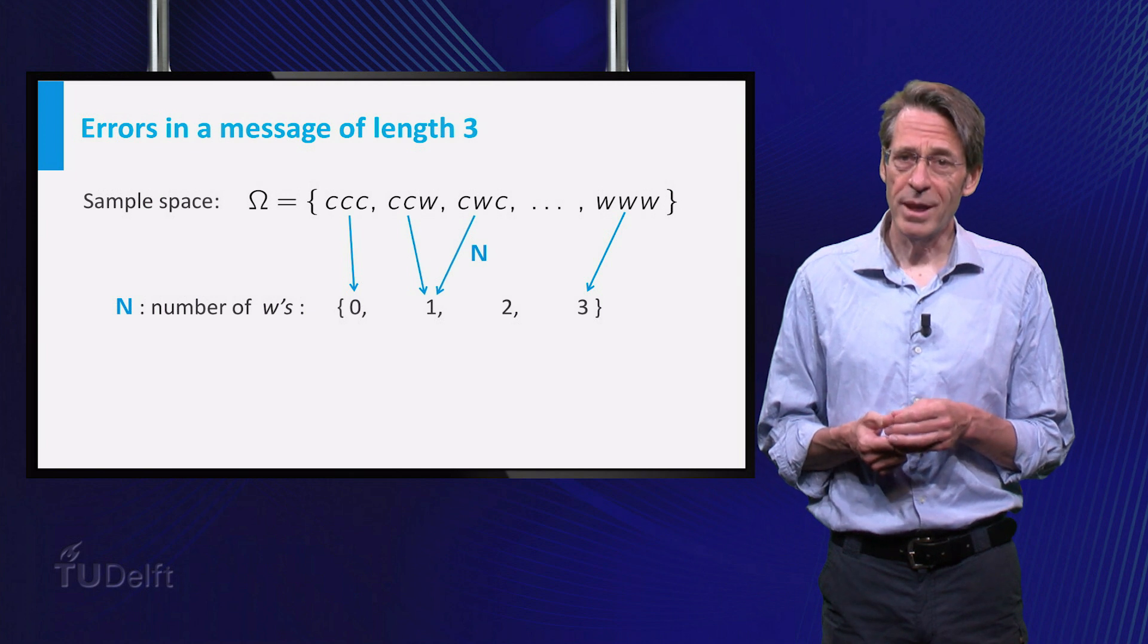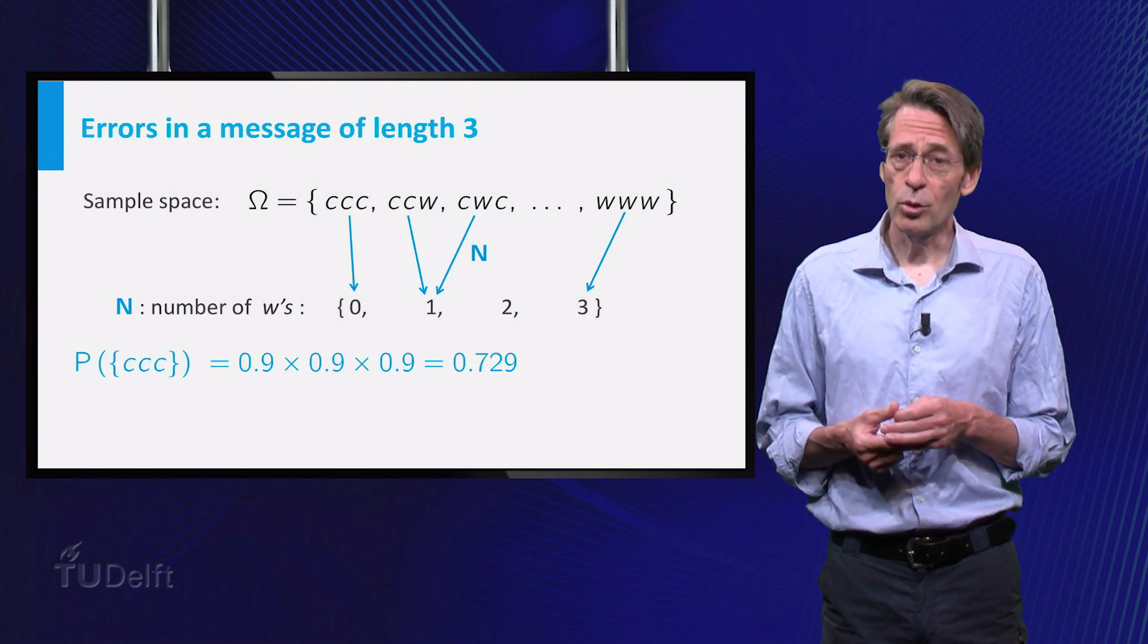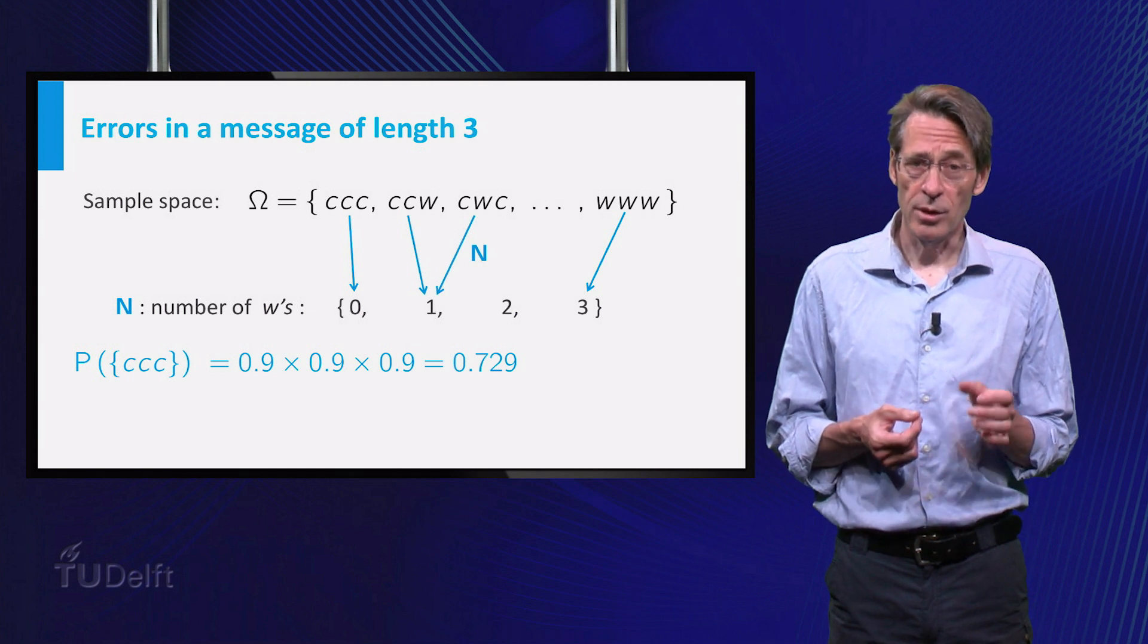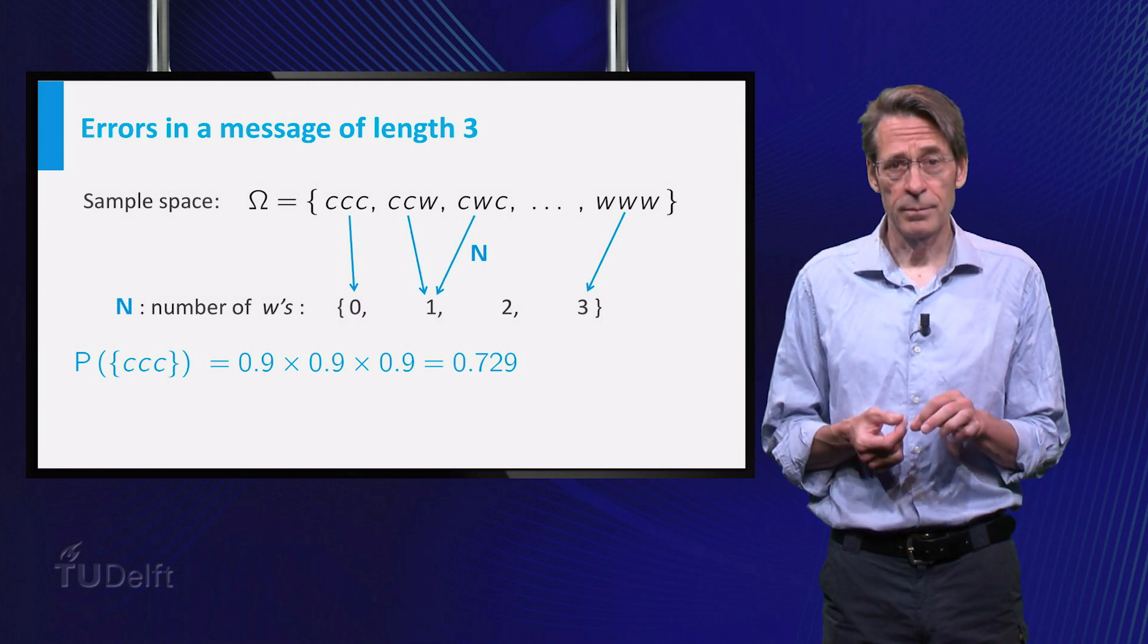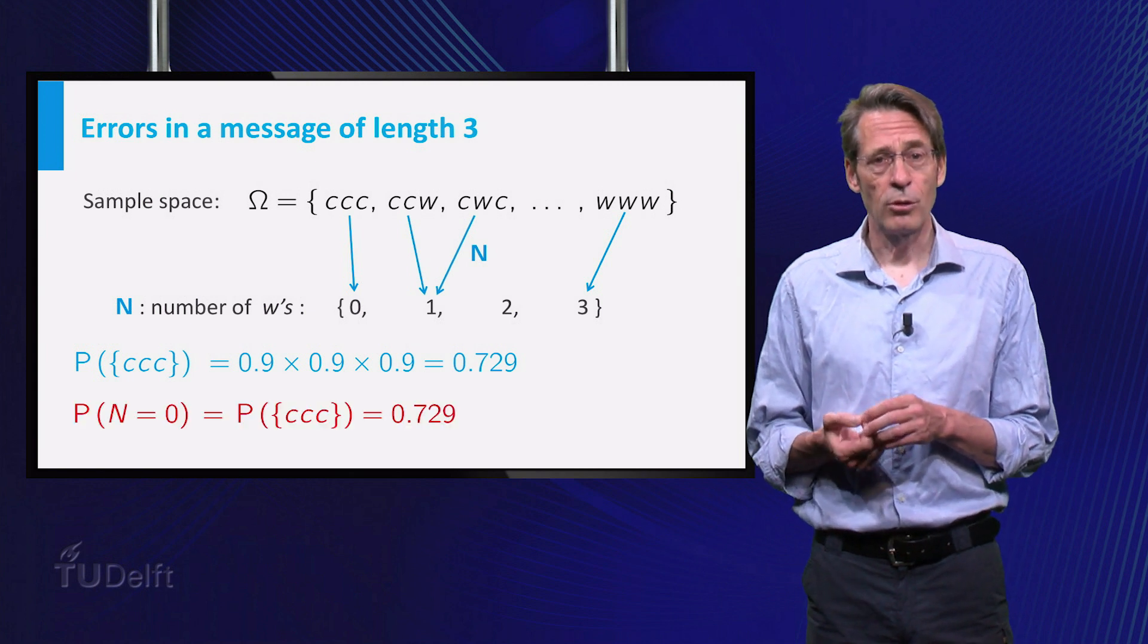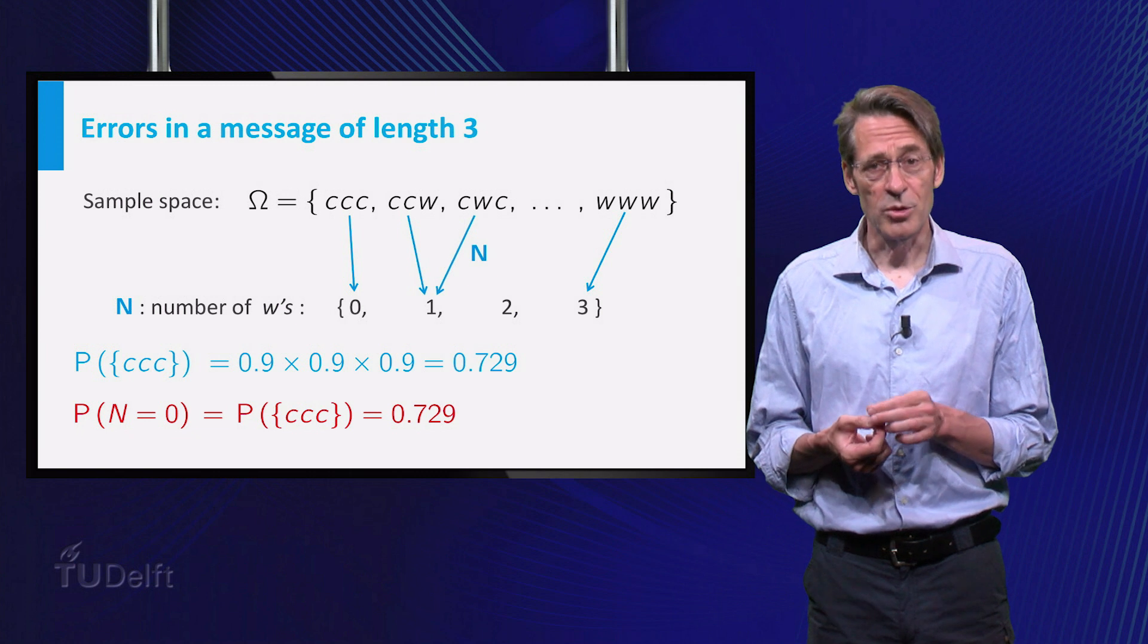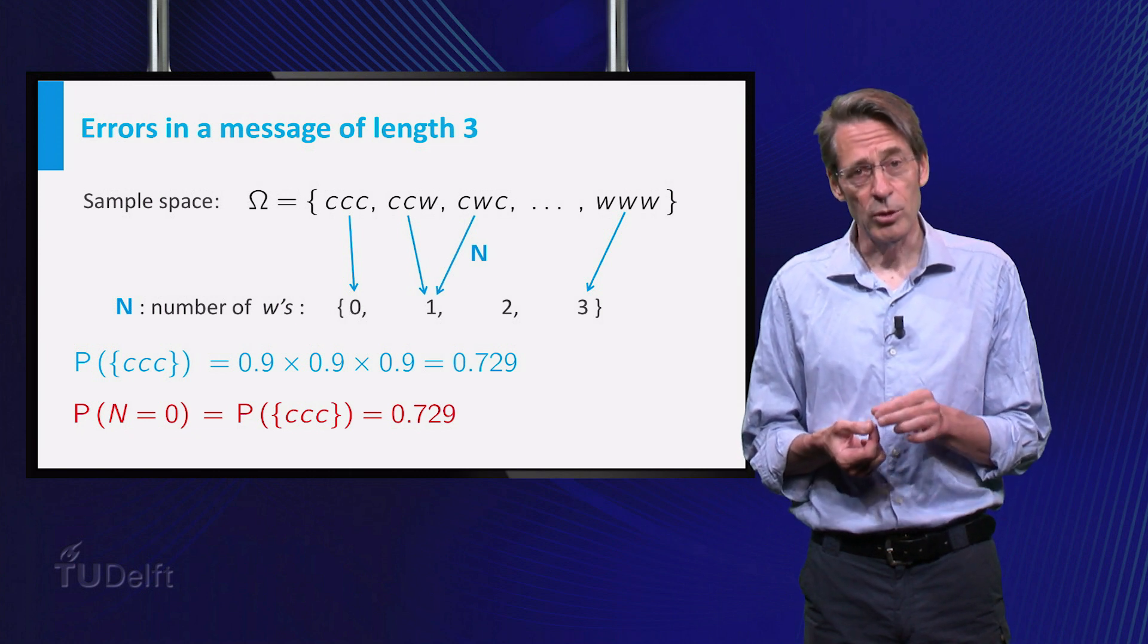Because of the assumed independence of errors, the outcome triple C has probability 0.9 times 0.9 times 0.9. And since this is the only outcome for which N gets the value 0, the probability of N to become 0 equals 0.9 cubed.